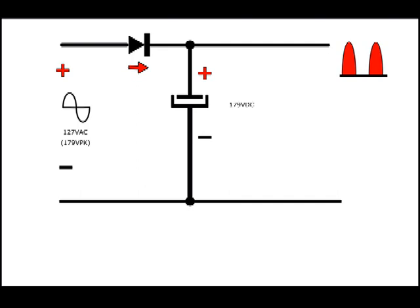This way, the capacitor gets a pulse for each cycle of the AC. If you have a 60 Hz line, you will have 60 pulses just keeping the capacitor charged with respect to the neutral wire at 179 volts, the peak voltage of the line voltage. This is called half-wave rectification.